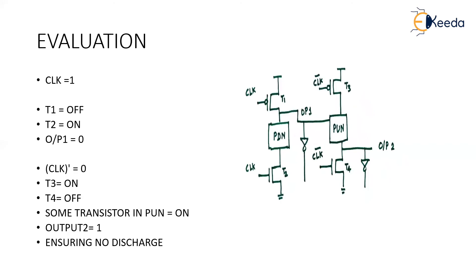Next, clock = 1. When clock = 1, T1 is OFF, T2 is ON, and output 1 is 0. Clock-bar becomes 0. When clock-bar = 0, T3 is ON and T4 is OFF. Since T4 is OFF, 0 is given to the pull-up network, turning some transistors in the pull-up network ON. This ensures no discharge at the output — output 2 still maintains logic 1.